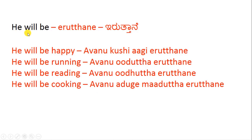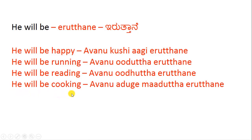For 'he will be,' iruttane is the suffix — iruttane must come at the end. 'He will be happy' is avanu kushi aagi iruttane, where avanu is 'he,' kushi is 'happy,' and aagi is the linking word. 'He will be running' — avanu odu thaa iruttane. 'He will be reading' — avanu odu thaa iruttane. 'He will be cooking' — avanu aduge maadu thaa iruttane.